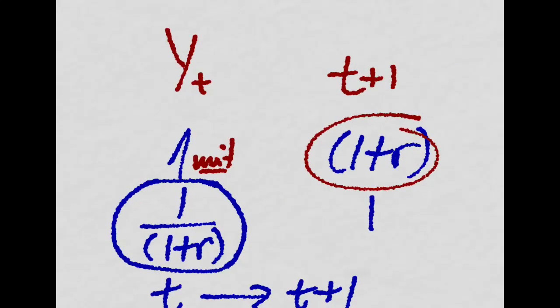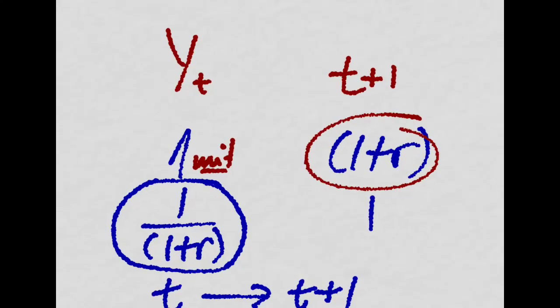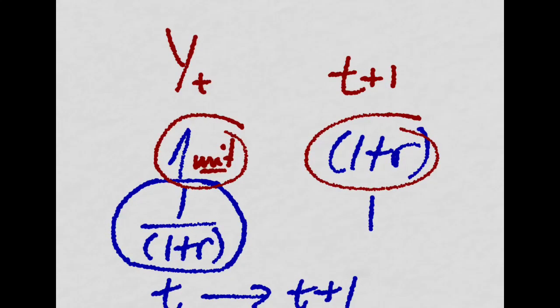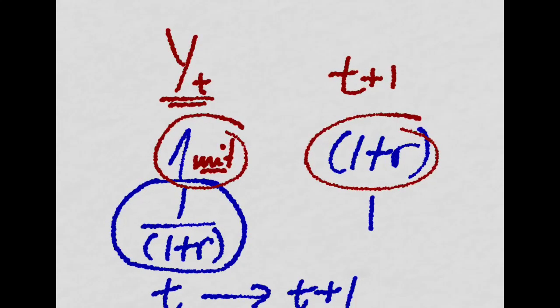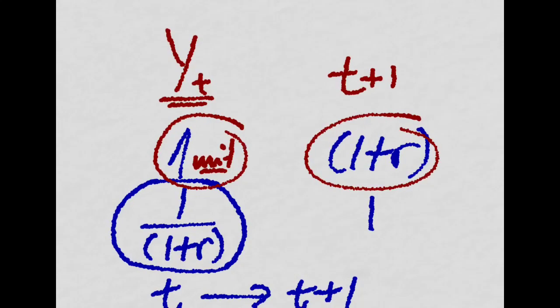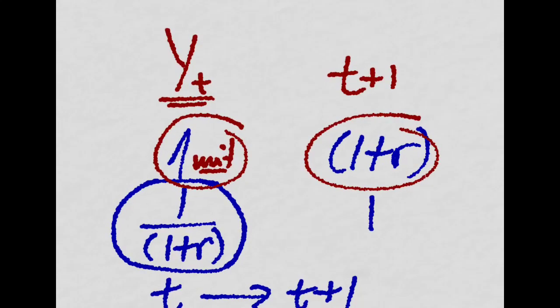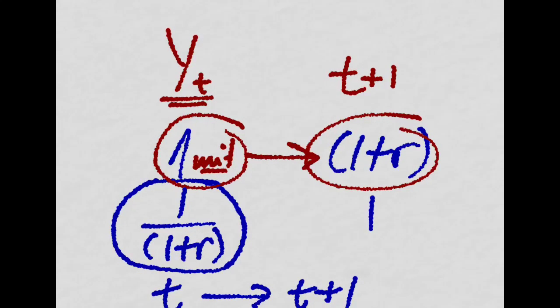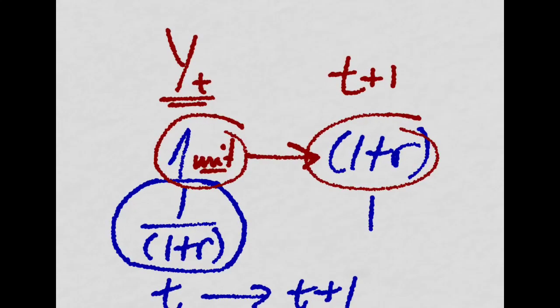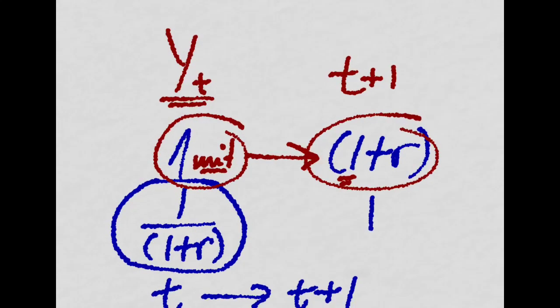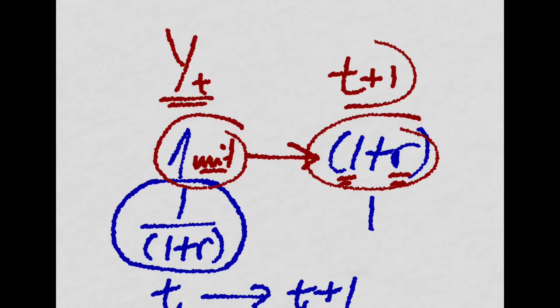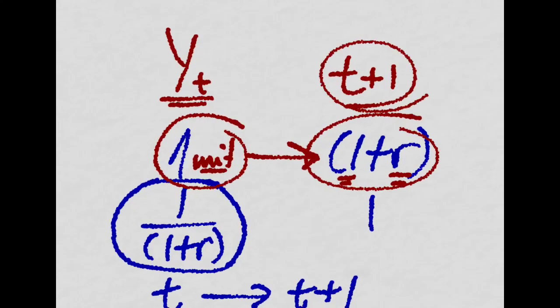So the way it works is, imagine you take one unit of your income at period T and you buy a bond with this. Then, in period T plus 1 you will receive the same unit and an interest rate R at T plus 1. All of this in terms of income, of output.